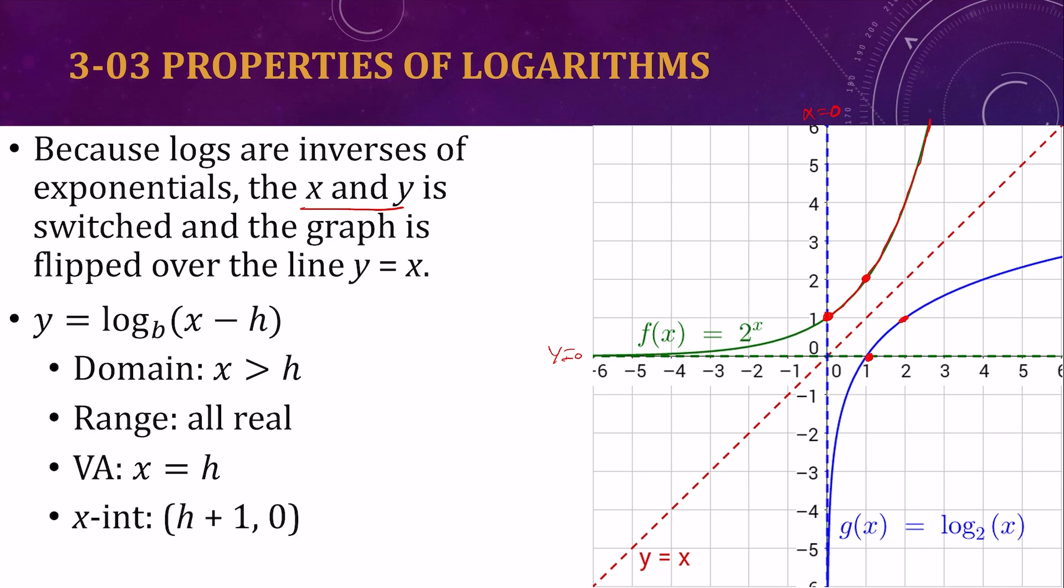And the x-intercept would be h plus 1 comma 0. Whereas for exponential, the y-intercept was 0 comma k plus 1.